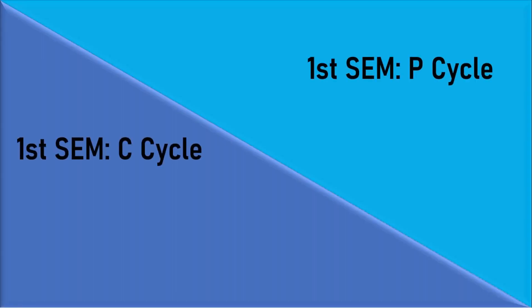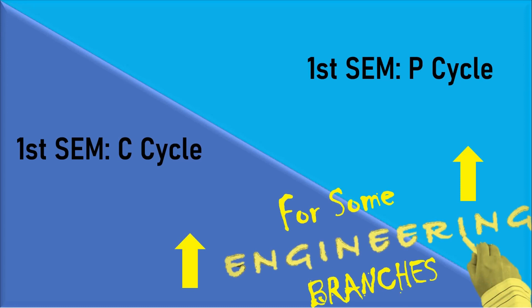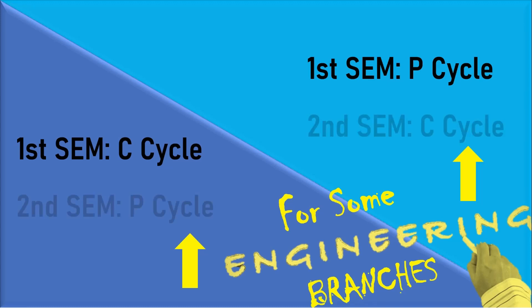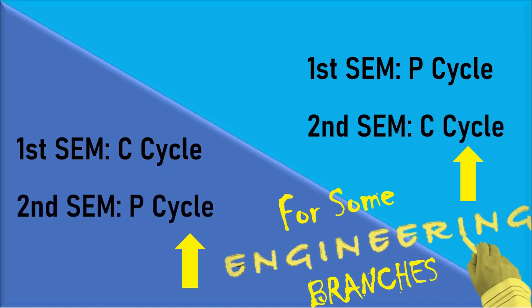In VTU, the first-year engineering will be divided into P-cycle group and C-cycle group. A P-cycle group will be assigned to some engineering branch students and C-cycle group will be assigned to others. In the second semester, those who learned P-cycle in the first semester will be learning C-cycle subjects, and vice versa.